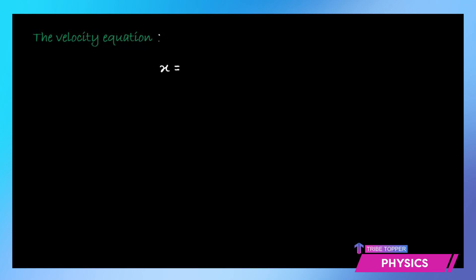In a previous video, we have learned that if x is equal to x₀ sin(ωt), then the velocity v is equal to v₀ cos(ωt), or you can say it is ω x₀ cos(ωt).